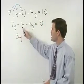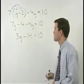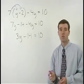So we have 3y minus 14 equals 10, and we can finish this problem in the usual way.